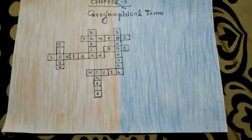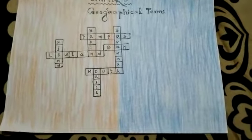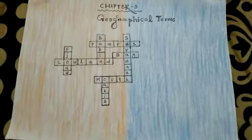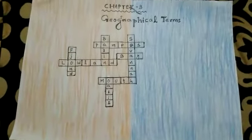Number eight: a place in the desert where water is found — that is known as oasis. So these are the answers of Chapter 3 on geographical terms. That is all for today's GK class. We will meet again in the next class. Till then, goodbye, take care, thank you all.